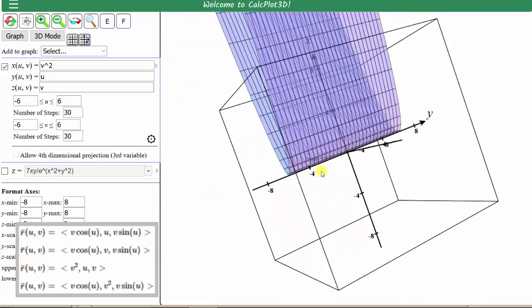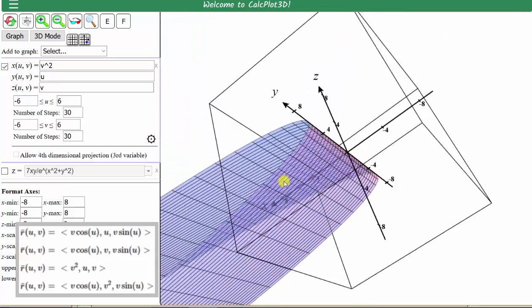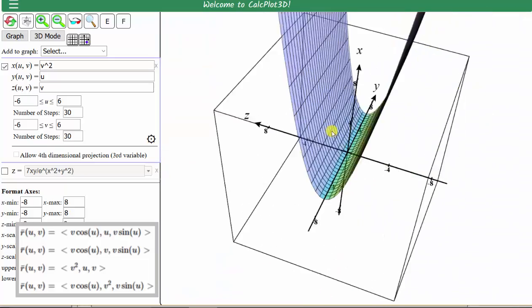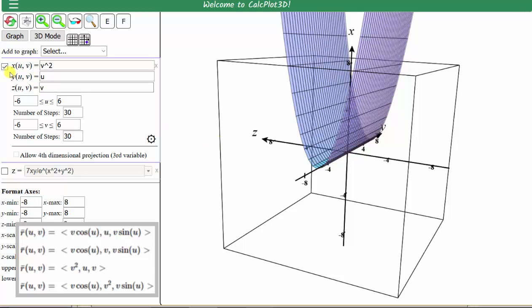Here we have a parabolic cylinder. Let's clear the graph.